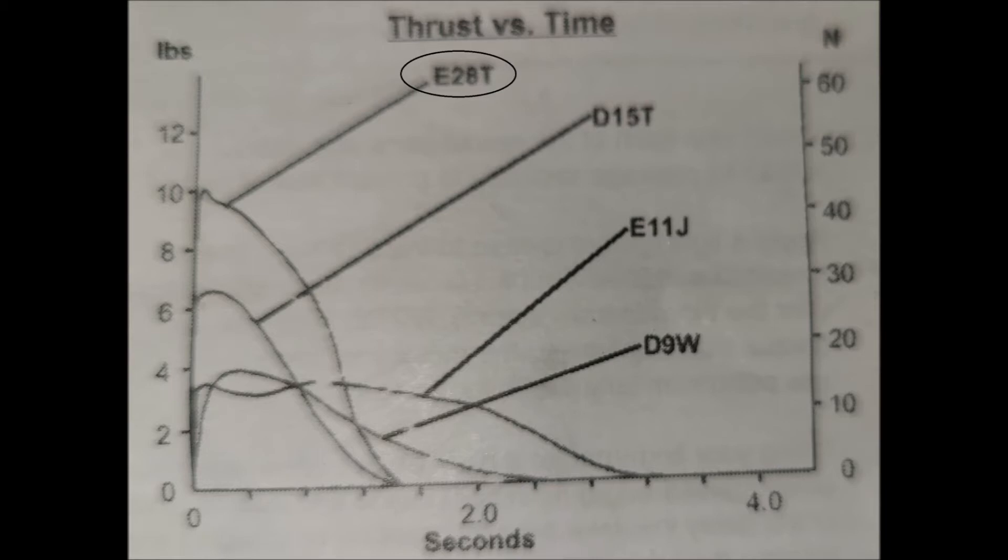Now let's move on to the next rocket, the Estes Star Orbiter, which was launched on an Aerotech E-28. Note here on the thrust curve that the burn time is significantly shorter than the G25, so I am expecting a much faster launch.